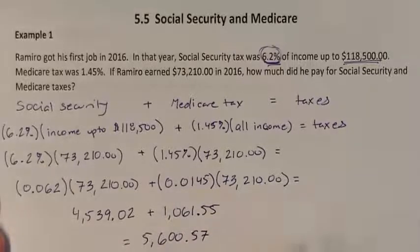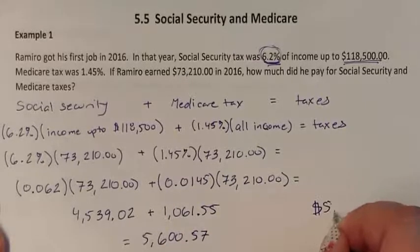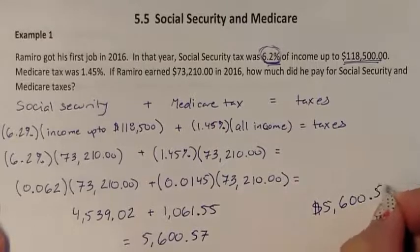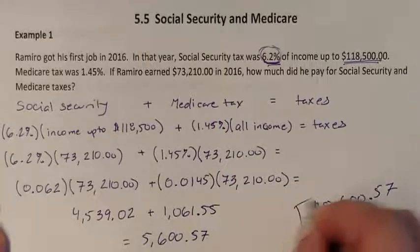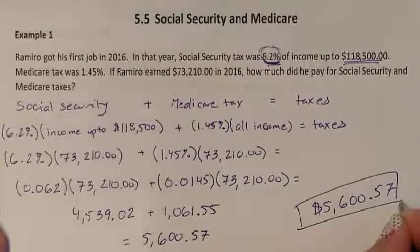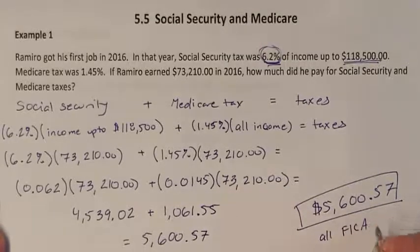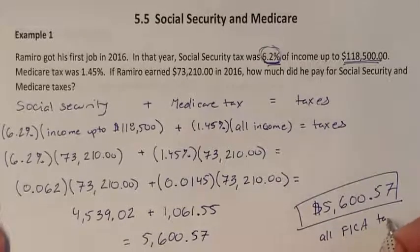The final answer is $5,600.57. This is all of his FICA taxes — his combined Social Security and Medicare.